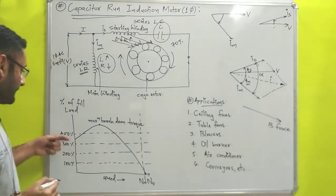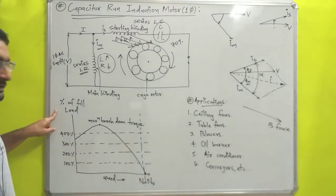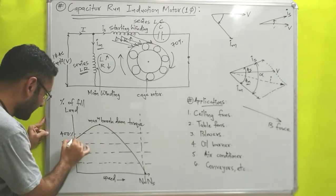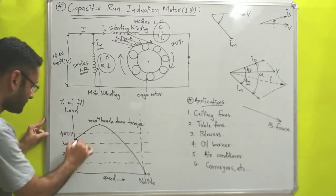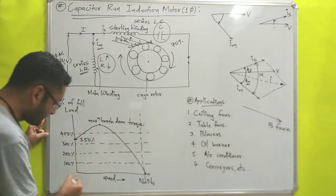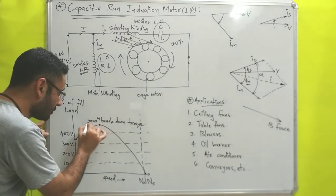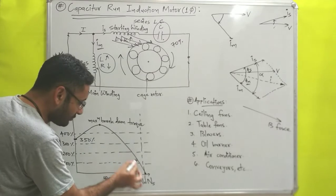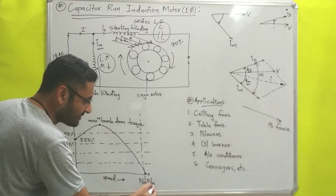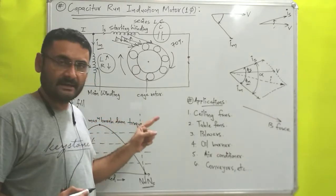Now we will understand the speed-torque characteristics curve. On the x-axis, speed is plotted; on the y-axis, percentage of full load torque is plotted. From the diagram, to start this motor a very high initial torque is required — around 350% of the maximum load torque value. As speed increases, torque also increases up to the maximum breakdown torque value, after which torque starts to decrease and becomes zero when the actual rotor speed equals synchronous speed.